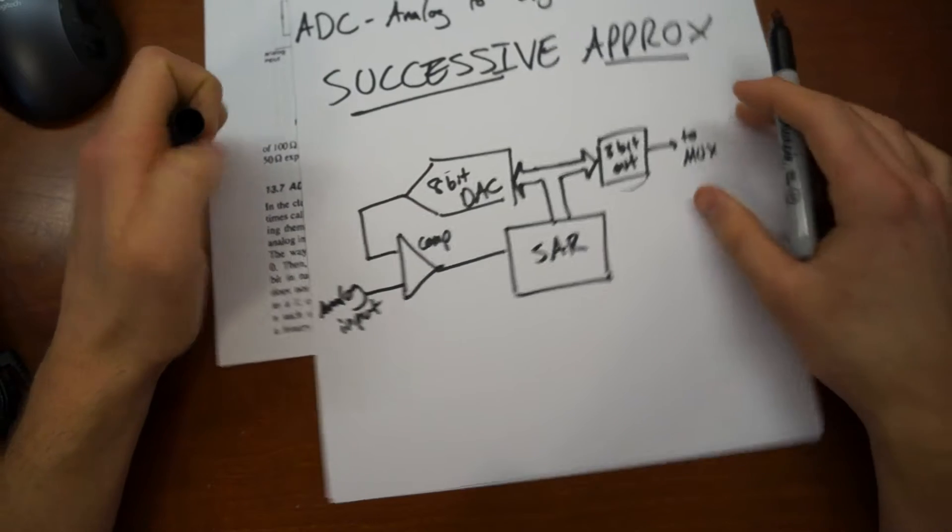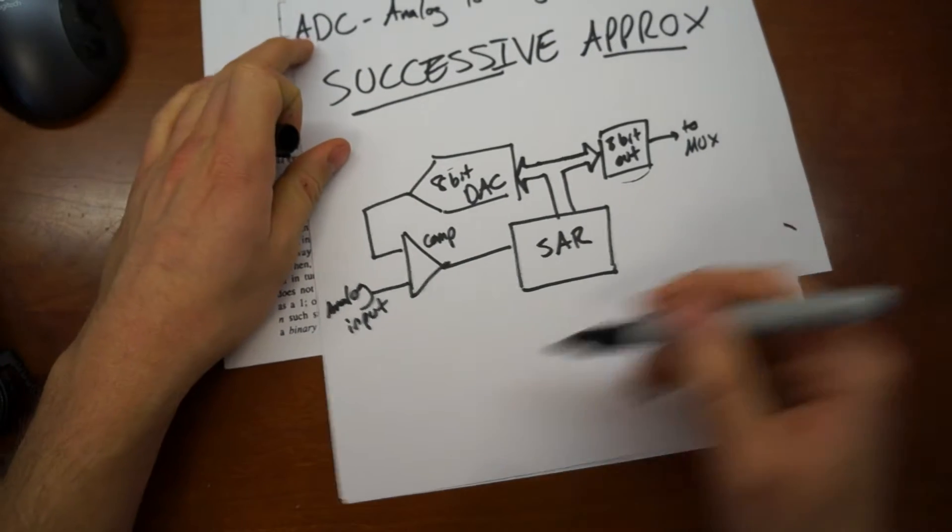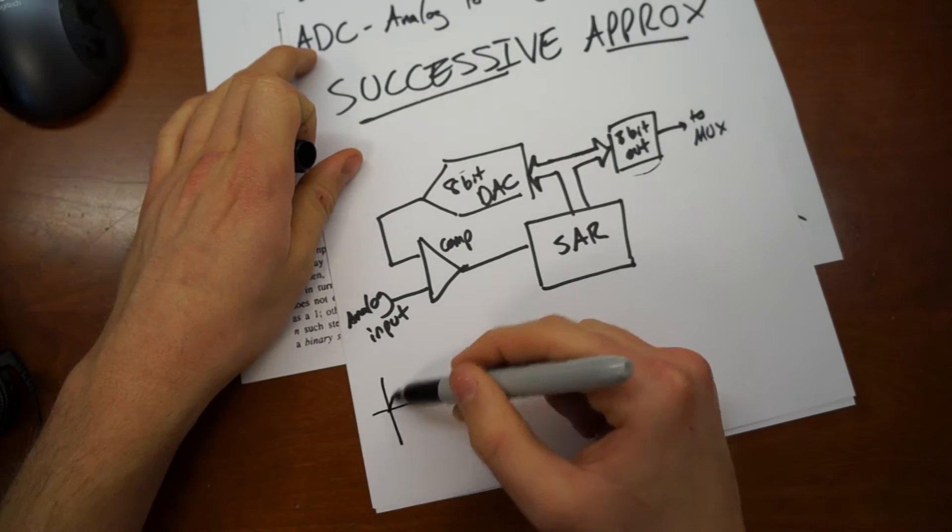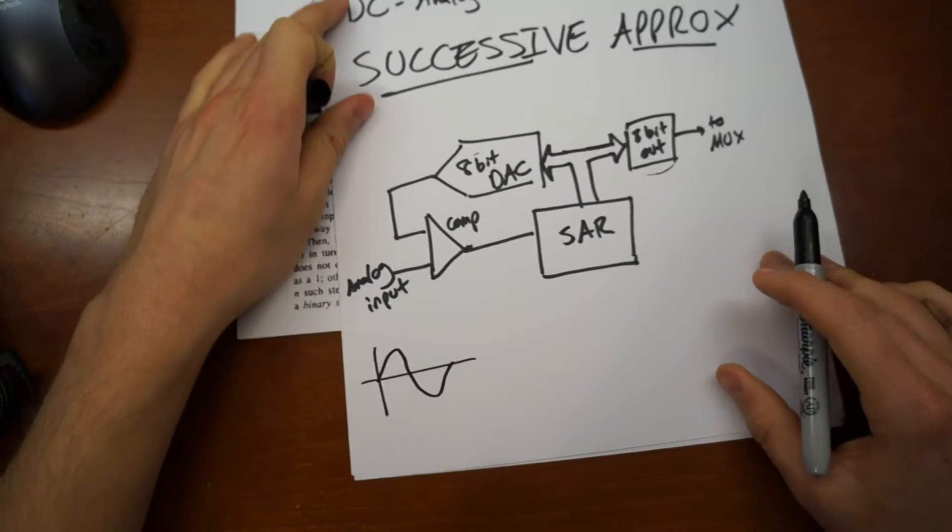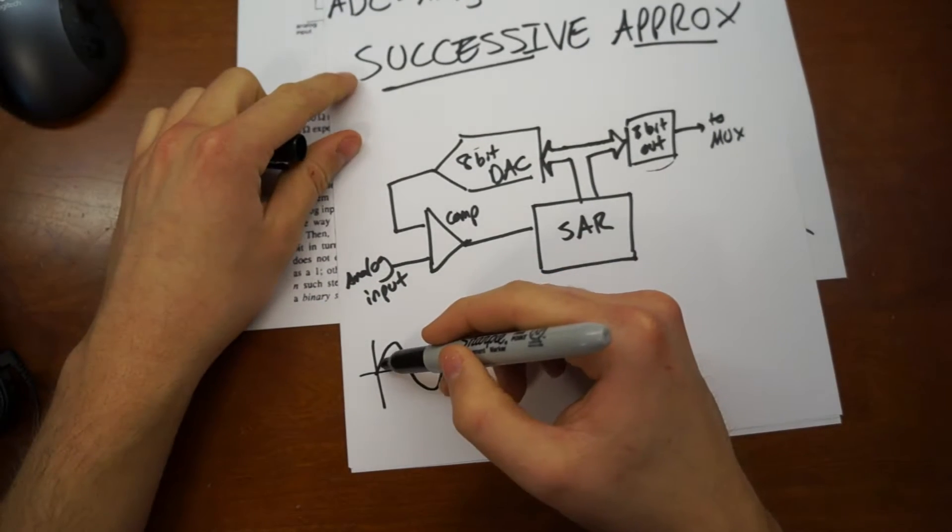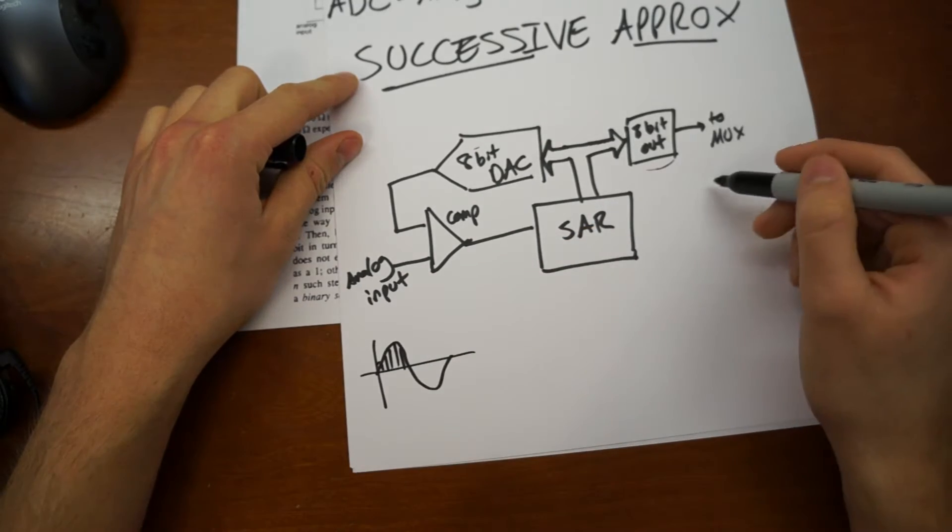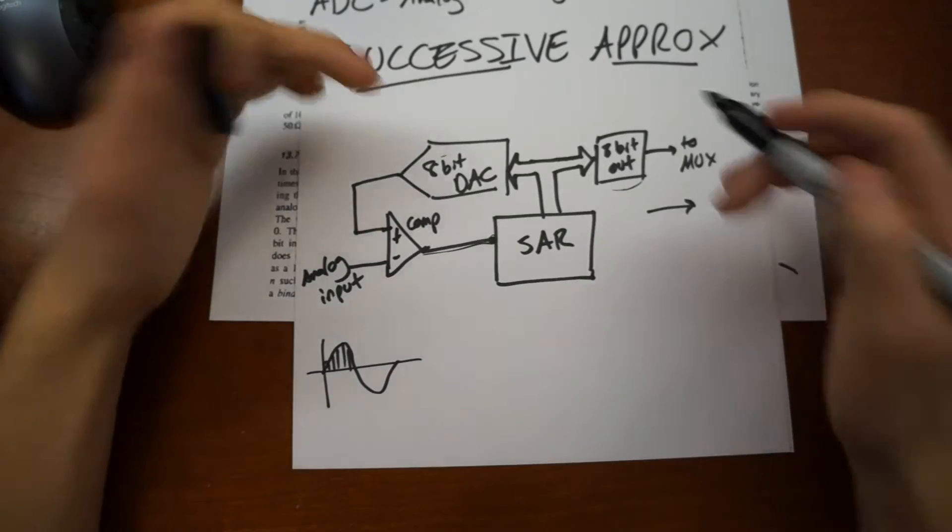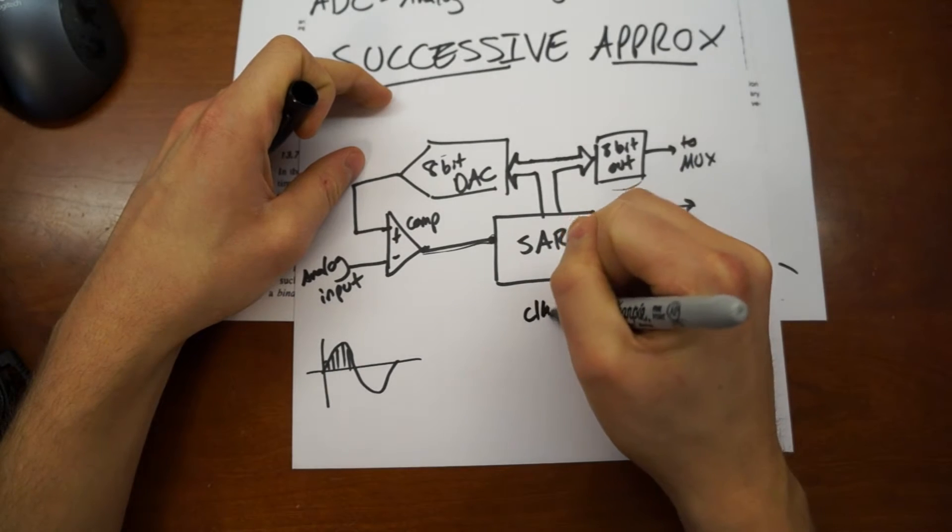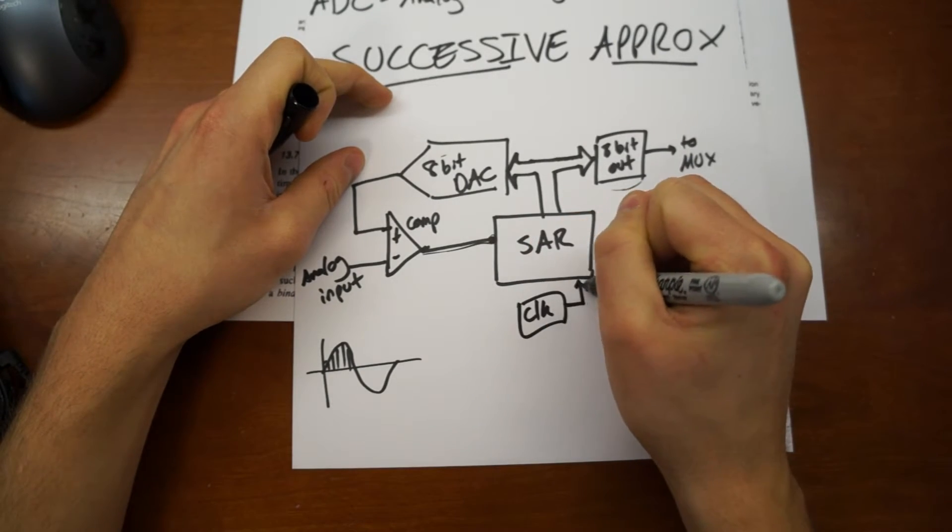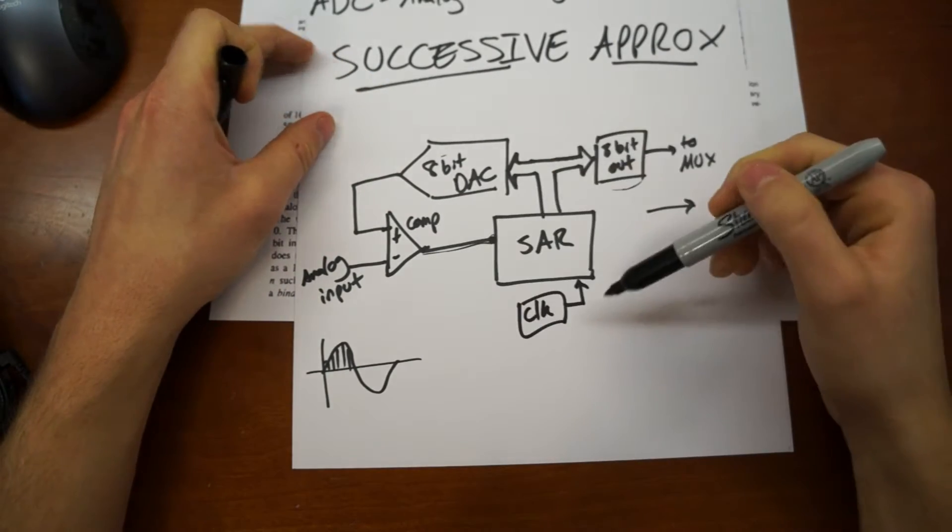And so what happens here is we have some input waveform. And we want to sample this thing and read its values, its digital values, out to a microcontroller.